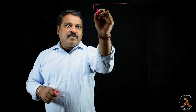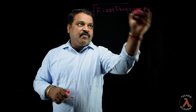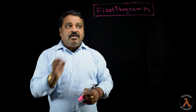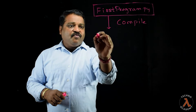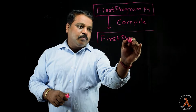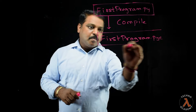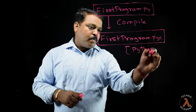In this video, let us understand how a Python program executes. Let's say we have a file with the name first_program.py. In order to compile this program, we say python first_program.py. Once this program gets compiled, we get a file called first_program.pyc, which is nothing but Python bytecodes.